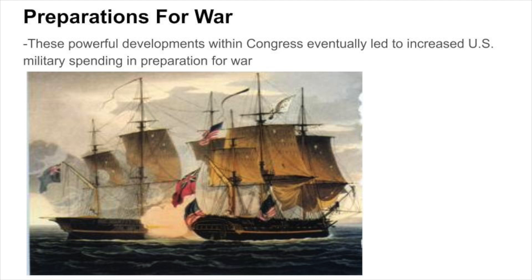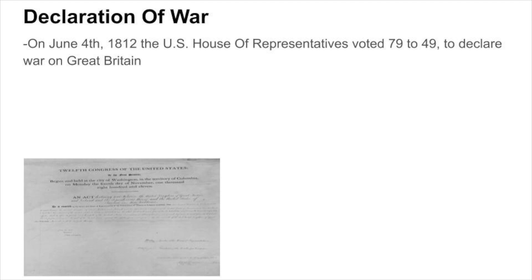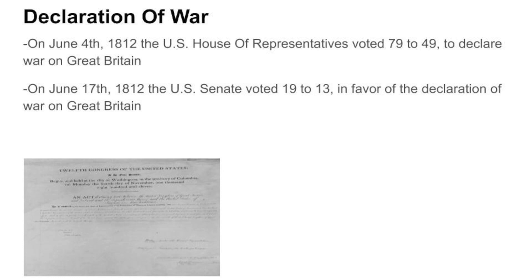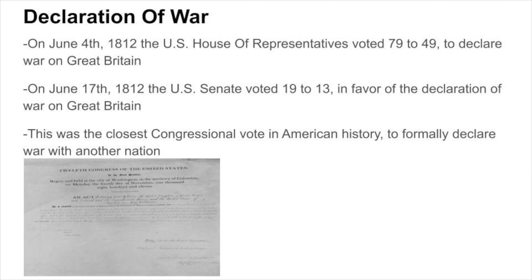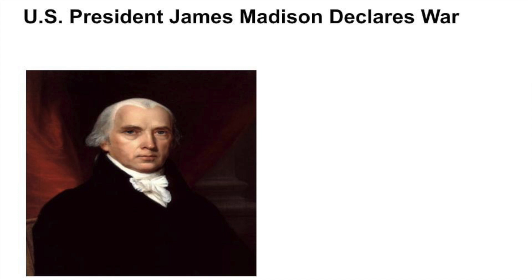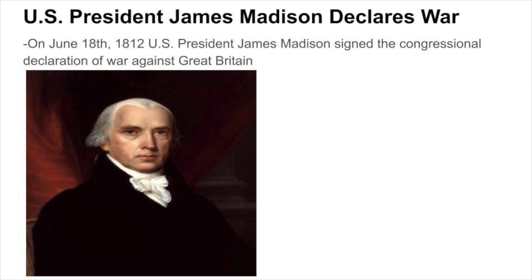On June 4, 1812, the U.S. House of Representatives voted by a margin of 79 votes to 49 votes to declare war with Great Britain. Then, on June 17, 1812, the U.S. Senate voted by a margin of 19 votes to 13 votes in favor of the declaration of war on Great Britain. It should be noted that this was the closest Congressional vote in American history to formally declare war with another nation. The final move towards war was made on June 18, 1812, when U.S. President James Madison signed the Congressional Declaration of War against Great Britain.